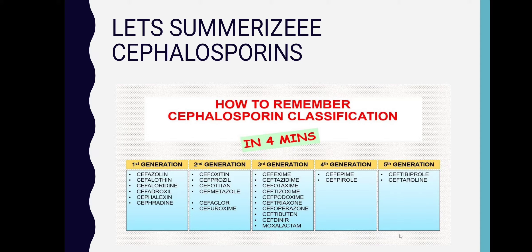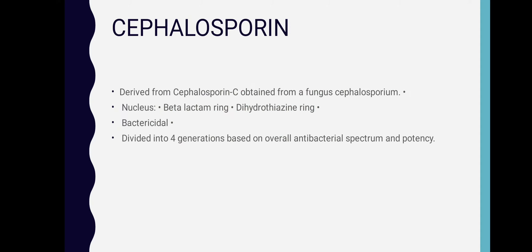As you can see, first generation cephalosporins start with FAPH and PHRA — with the exception of cefaclor, which is second generation. Third generation cephalosporins include those ending in IME, O, and E or TAN — with the exception of cefroxamine, which is second generation. Fourth generation cephalosporins have the alphabets PI, and fifth generation have the alphabet ROL — these are the mnemonics for identifying cephalosporin generations.